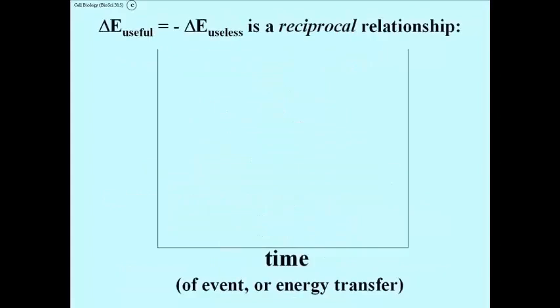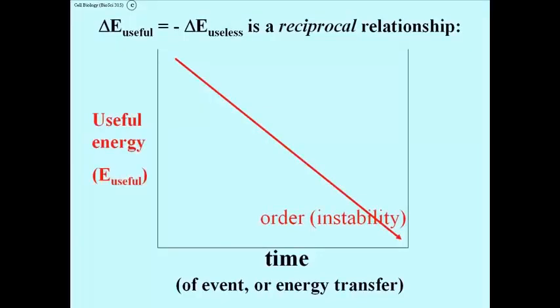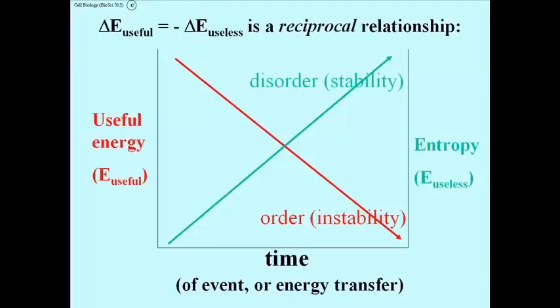And what is interesting about it is that it establishes or states a reciprocal relationship between the two quantities. Graphed this way, useful energy is always declining, and useless energy is always increasing reciprocally. I've introduced two terms here, stability and instability, which I haven't spoken of yet.